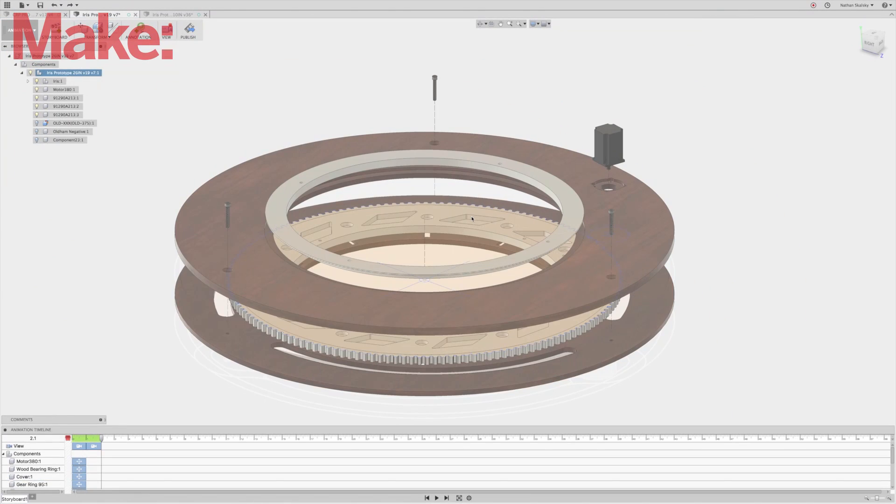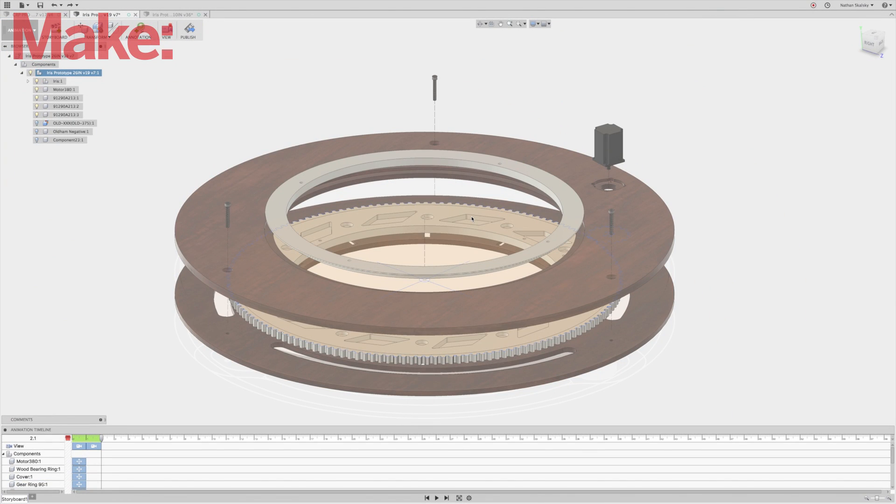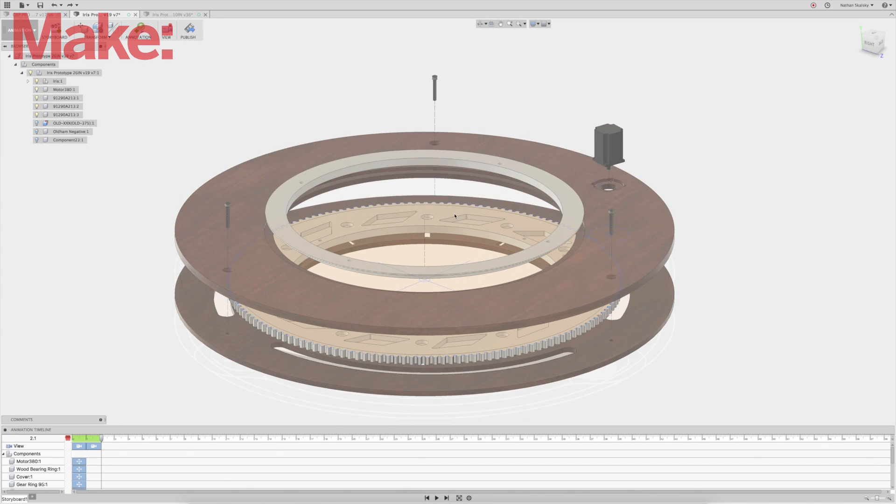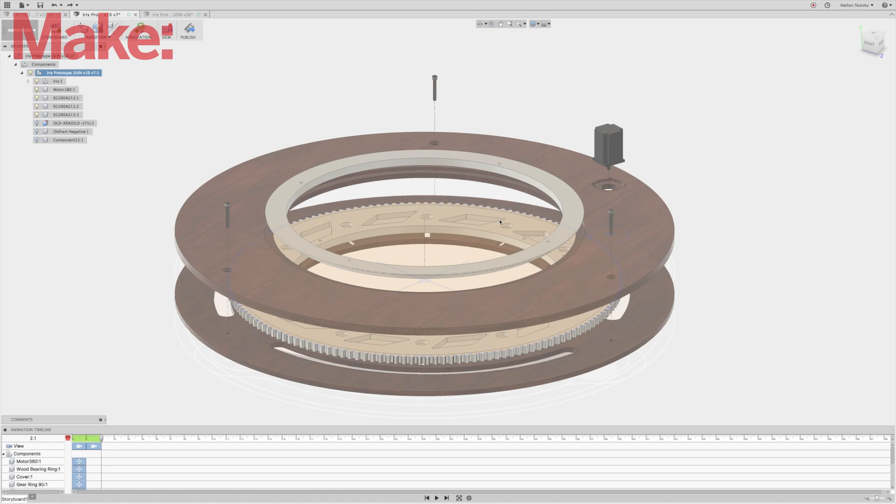We've also made the fixed plates the same diameter as the stairwell that we're going to be installing this in and also done some weight reduction on the moving parts and some of the fixed portions using pockets and patterns. After all what good is an awesome skylight if you can't lift it above your head to install it. This will also help reduce friction so I'm very excited about some of these changes.